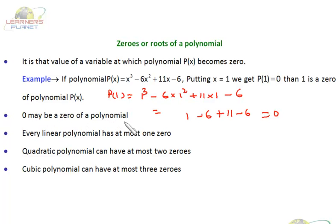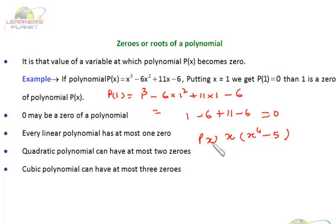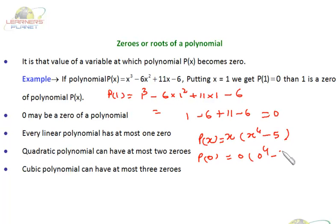Zero may also be a zero of a polynomial. Suppose I have a polynomial p(x) = x⁴ - 5x. If I put x as 0, the value of this expression will be 0. That means 0 is a zero or root of this polynomial.